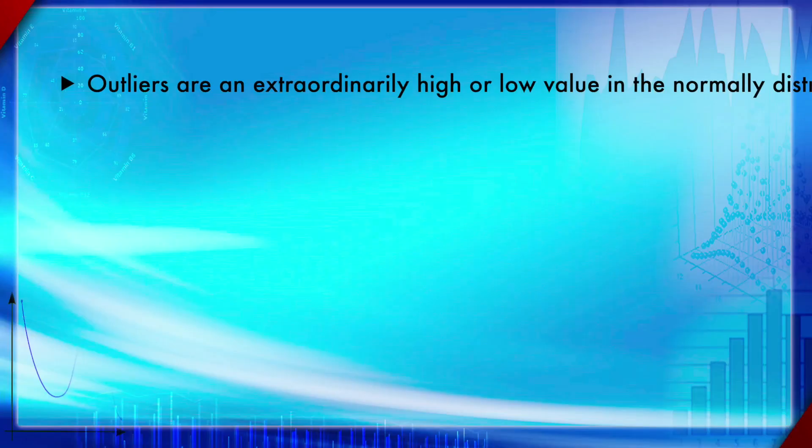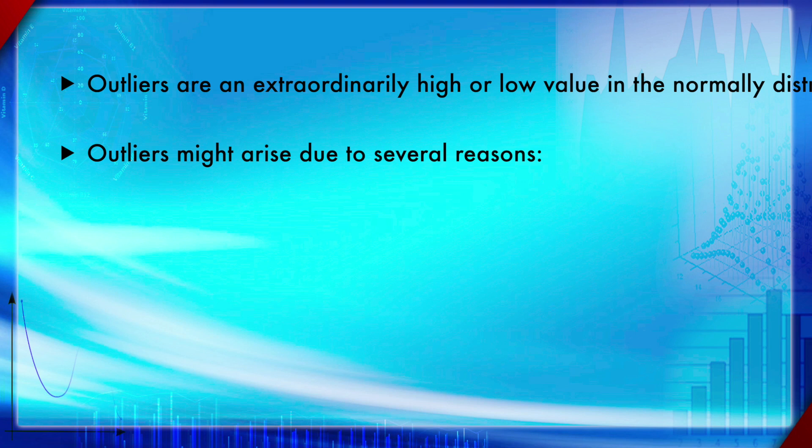Module 10, moments, normality tests and outliers, section 3: outliers. What are outliers? We are going to discuss this in this session. Outliers are simply an extraordinarily high or low value in a normally distributed data set. Abnormally high or abnormally low scores or values are known as outliers.